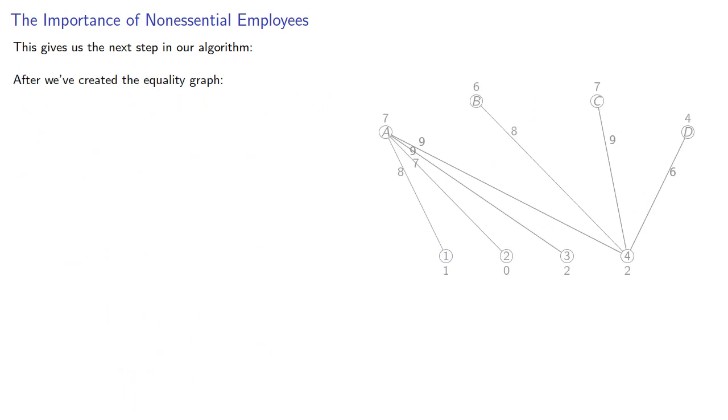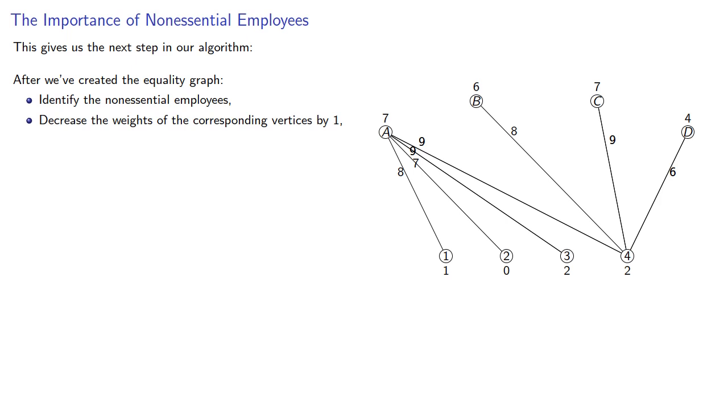And so this gives us the next step in our algorithm. After we've created the equality graph, identify the non-essential employees, decrease the weight of the corresponding vertices by 1, increase the weight of the adjacent vertices by 1, then lather, rinse, repeat.